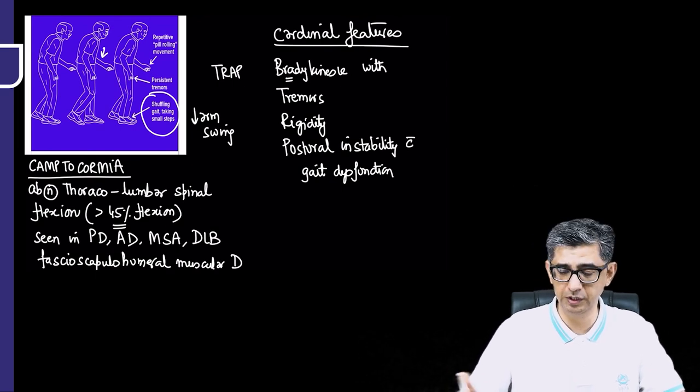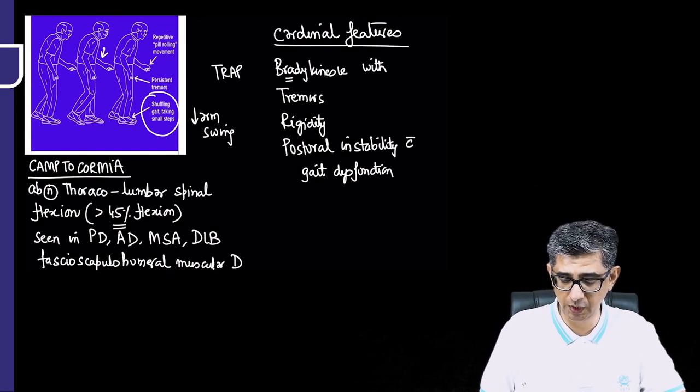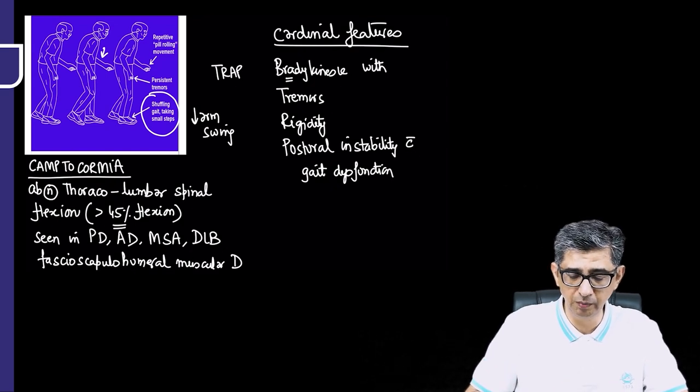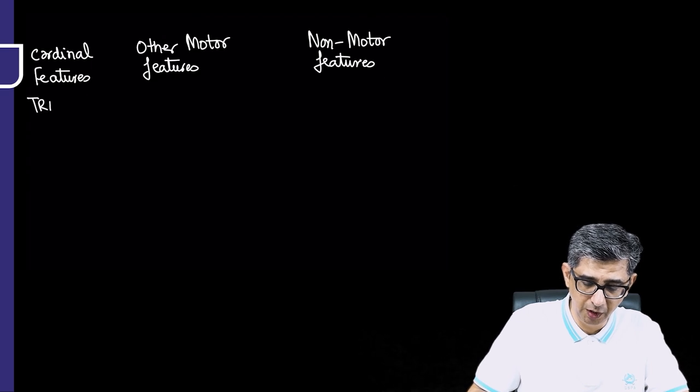I've incorporated the cardinal features. What we'll do next would be to talk about other motor features that would be developing in these patients. When I talk about the diagnostic criteria, bradykinesia will be right there on the top, with presence of any of the following: tremors, rigidity, and postural instability. Now, the other motor features that can be counted would be that the handwriting of this person...